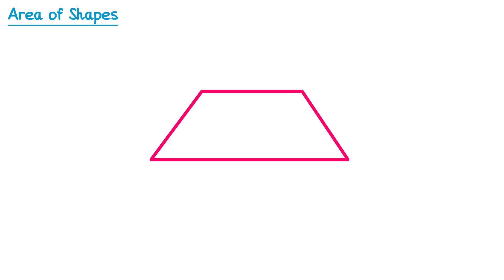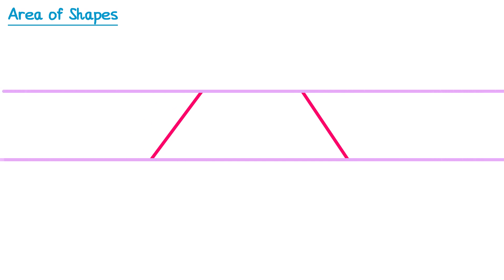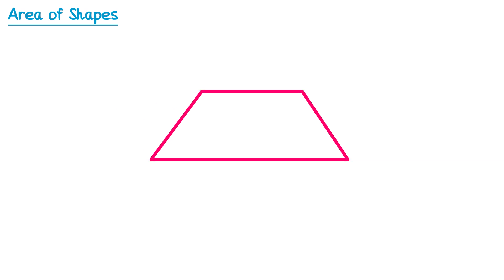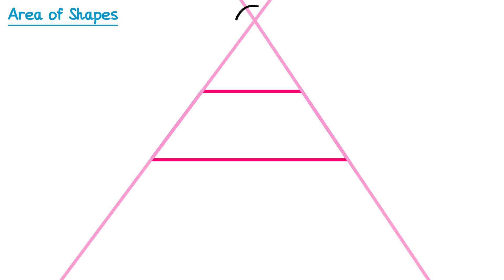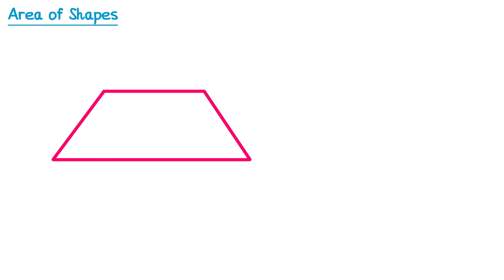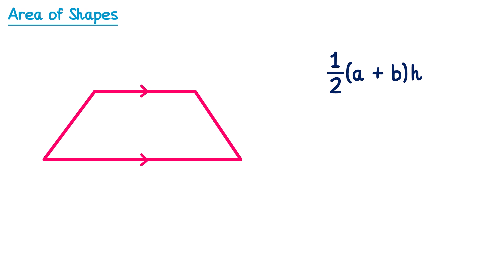Now let's move on to the final shape — a trapezium. A trapezium is a shape that has one pair of parallel sides. You can see the top and bottom sides here are parallel; however, the sides at the side are not parallel because they would cross up here. We usually use arrows to indicate which sides are parallel. To find the area of a trapezium, we need to use a formula where A and B represent the parallel sides and H is the perpendicular height of the trapezium.